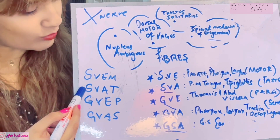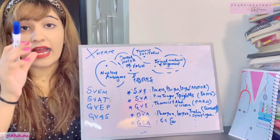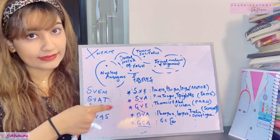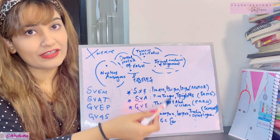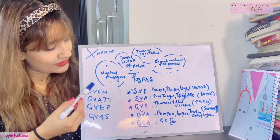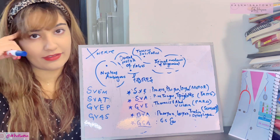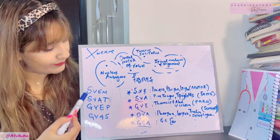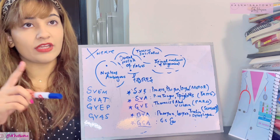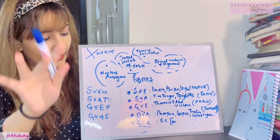I want you to memorize these mnemonics: SWIM, SWAT, GUEP, and GUAS. I know they're kind of weird mnemonics, but trust me, learning these is easier than learning individually what these are. Keep saying them throughout the day so they stick in your mind: SWIM, SWAT, GUEP, GUAS.